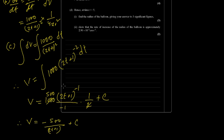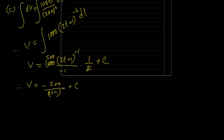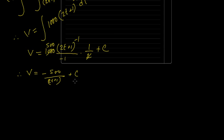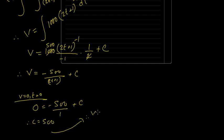Now remember, they gave v equals 0, t equals 0 to find the particular general solution. Whenever you have a constant, it's called the general solution. v equals 0, t equals 0, 0 equals minus 500 divided by 1 plus c. Therefore, c equals 500. Therefore, v equals minus 500 by 2t plus 1 plus 500. Done.